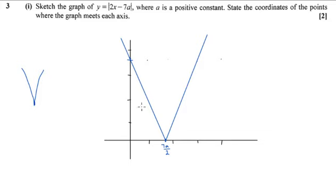And it asks us to state the coordinates. The coordinates are going to be, this one's going to be 7a over 2, 0, and this one is going to be 0, 7a.